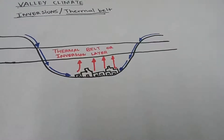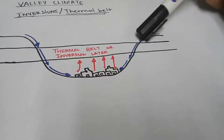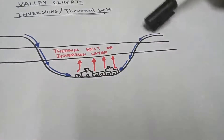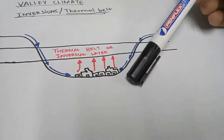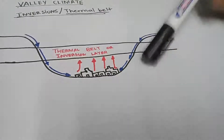First of all, this thermal belt forms or begins to appear during night. Why? As we already discussed our katabatic breeze, you can see at the edges and sides of our slopes there is cold air that is going down the slope. That is why I'm saying it occurs during night — thermal belt forms during night. As you can see the illustration.